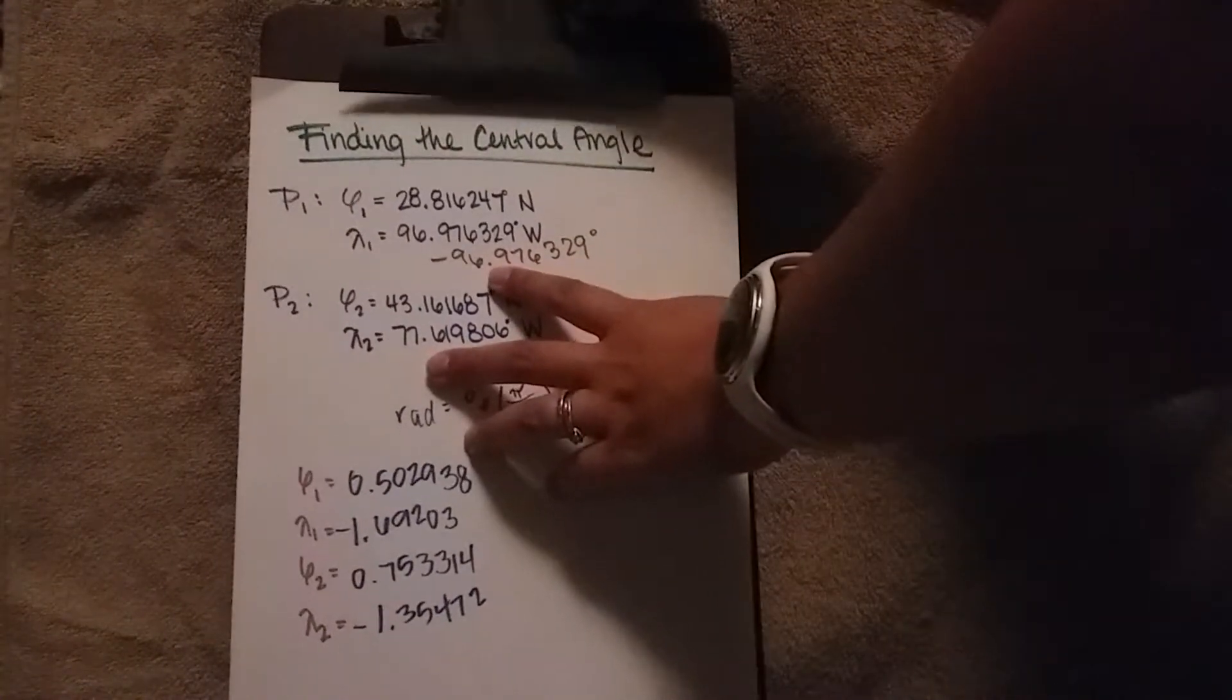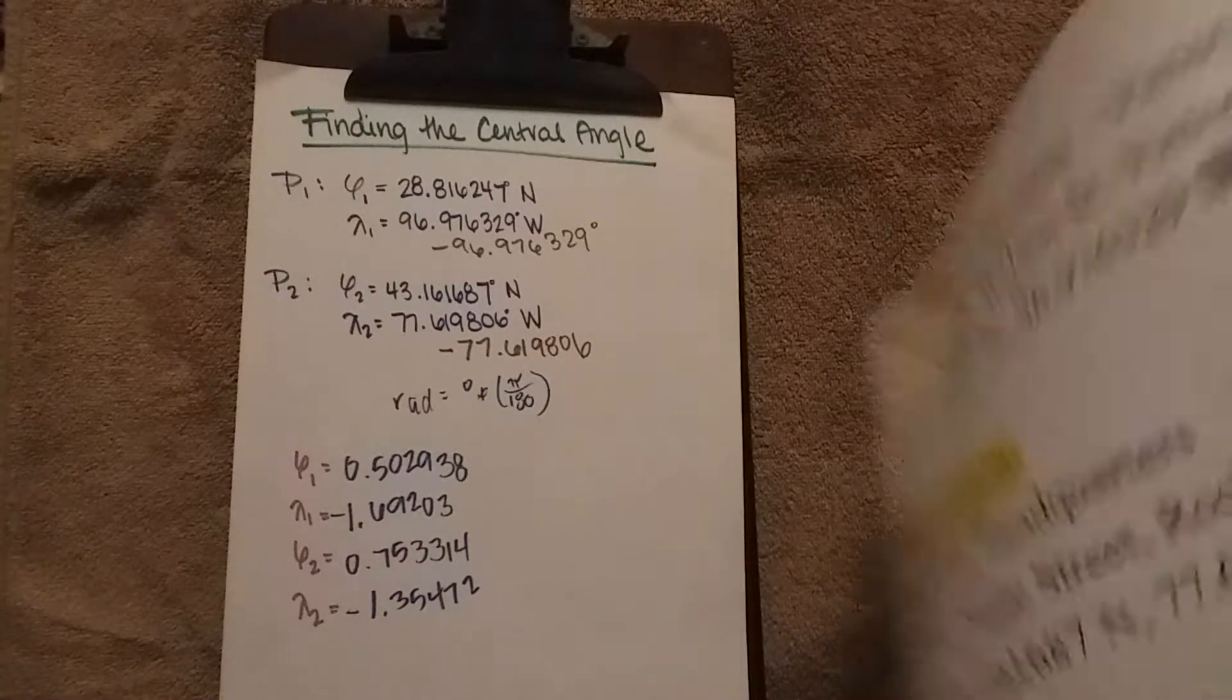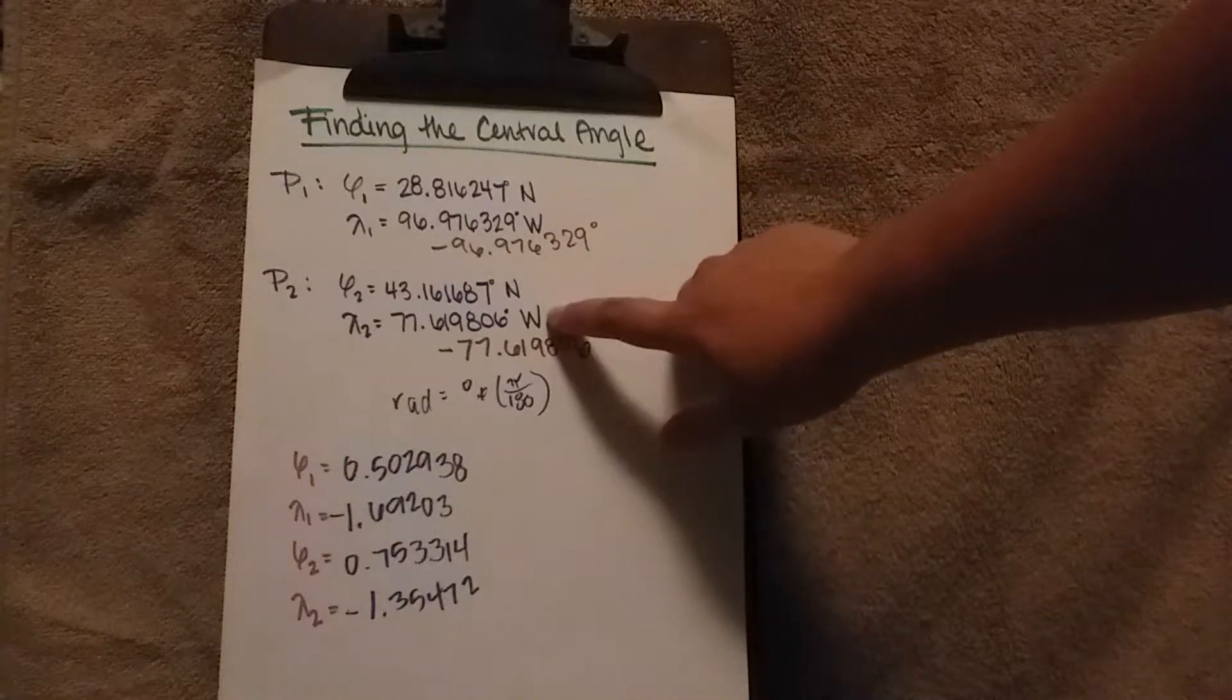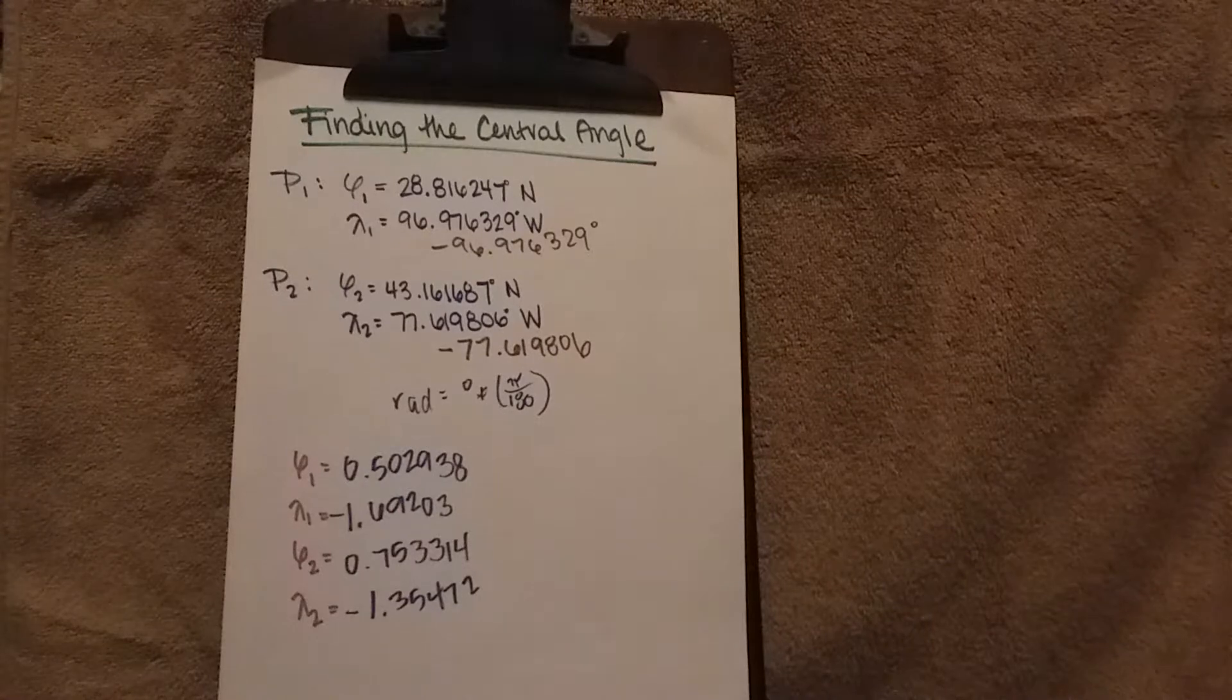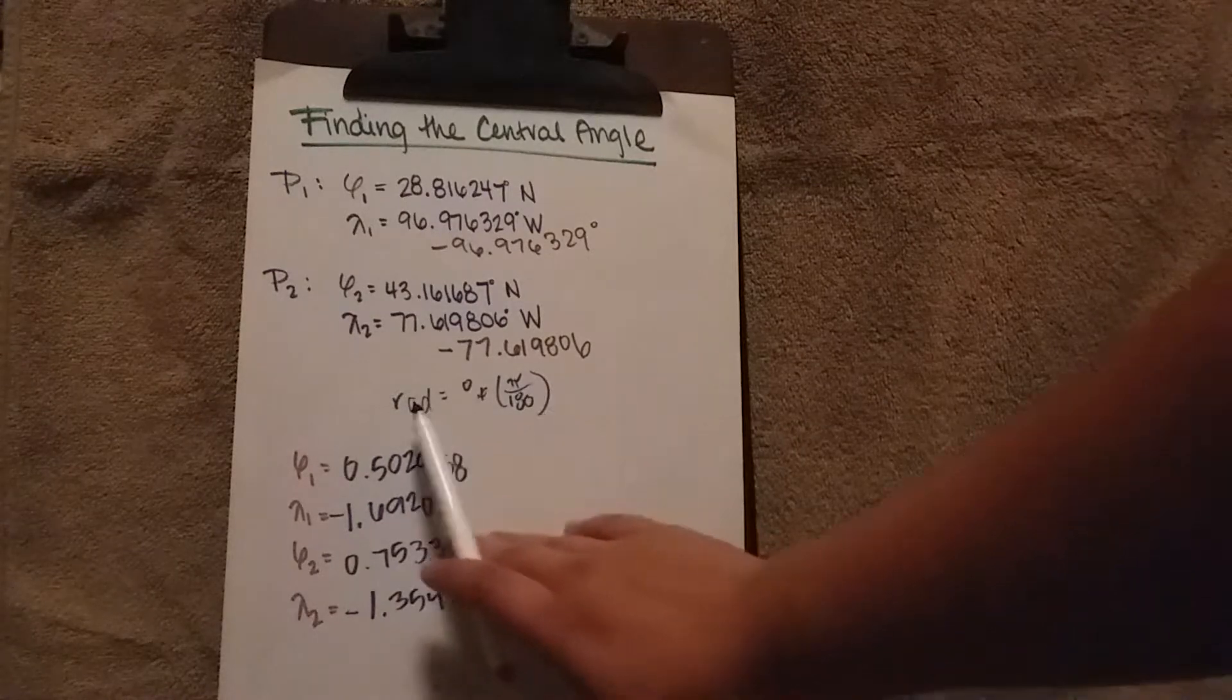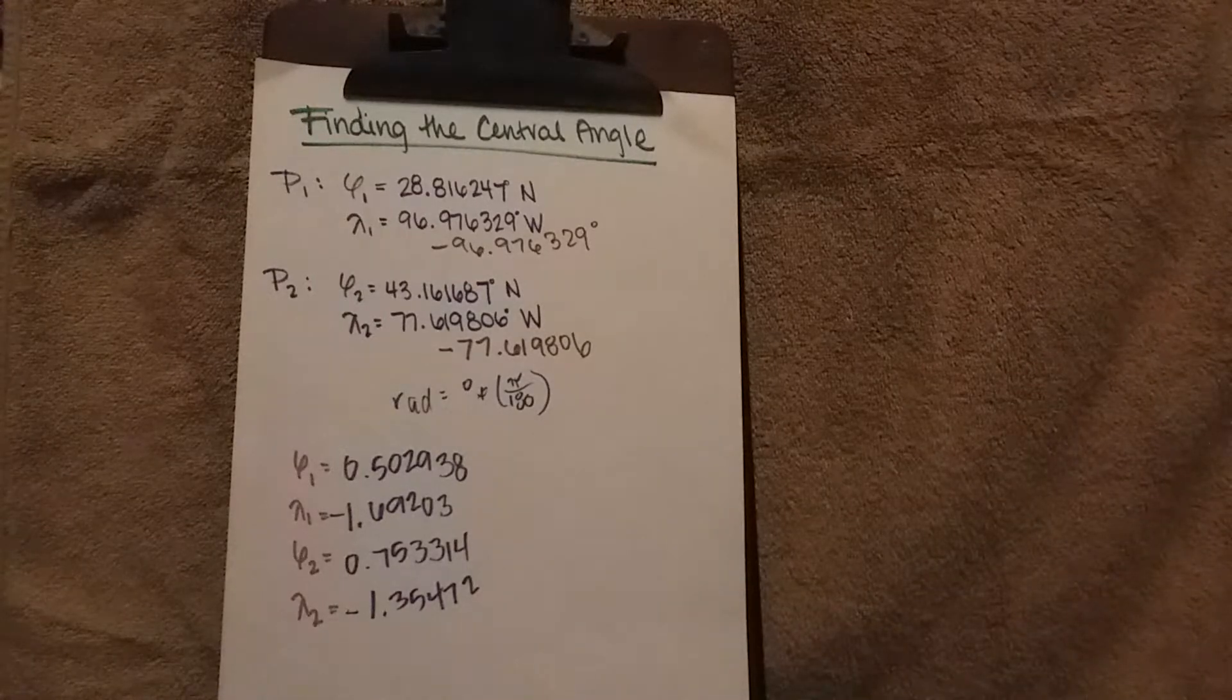First, we're going to take the same angles. These same angles are written here. For any two points that have west or south coordinates, we're going to change them to a negative. Next step is to change these degrees into radians. To do that, we take our degree and multiply it by pi over 180 to get radians. Here on the bottom, we have our coordinates in radians.